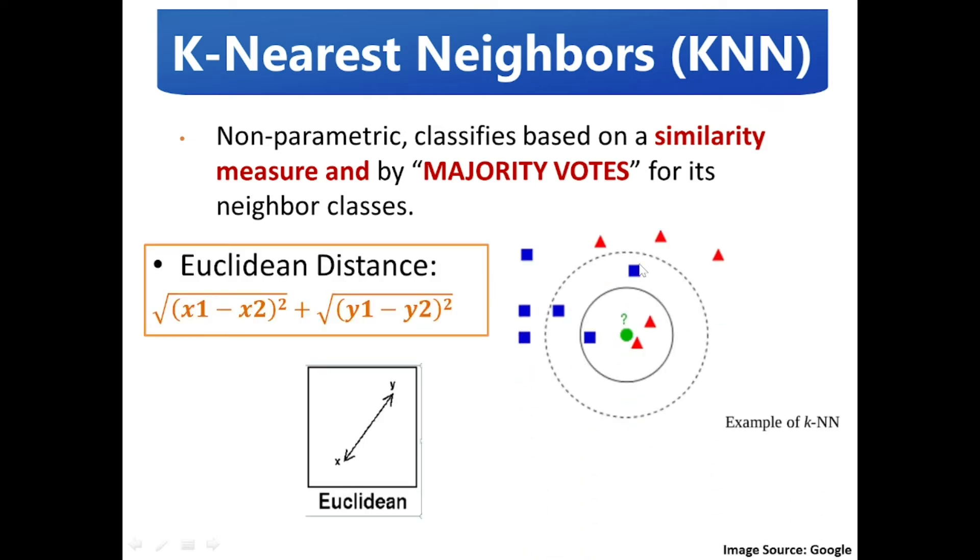Considering the two points of x comma y, the Euclidean distance is calculated using the formula here.